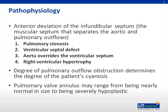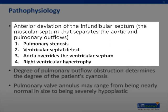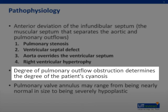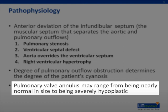Tetralogy of Fallot is caused by anterior deviation of the infundibular septum, which is the portion of the muscular septum that separates the aortic and pulmonary outflows. This single deviation leads to four major problems: pulmonary stenosis, a ventricular septal defect, an aorta that overrides the ventricular septum, and right ventricular hypertrophy. The degree of pulmonary outflow obstruction determines the degree of the patient's cyanosis. The pulmonary valve size may vary from normal to severely hypoplastic.